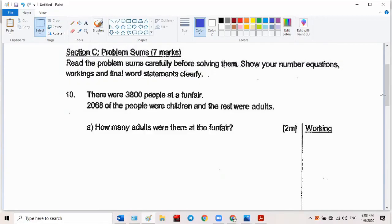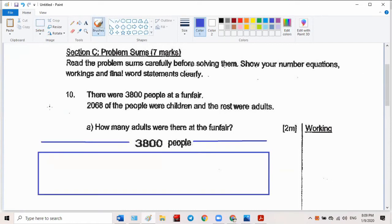There were 3,800 people at the funfair. So what shall we draw? Can you draw it? So far so good? That's the first statement. Many of the people were children. So what must we do? We're going to make another box inside here, because many people were children.